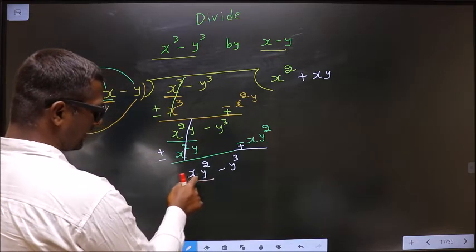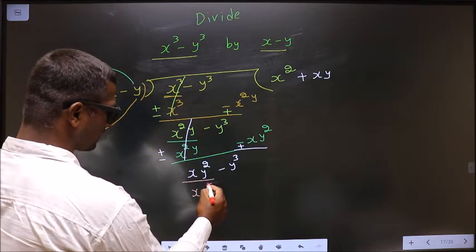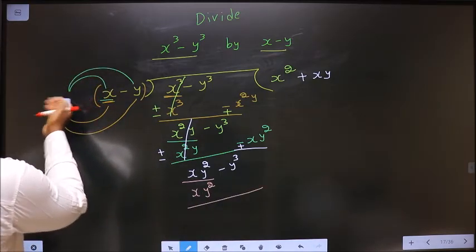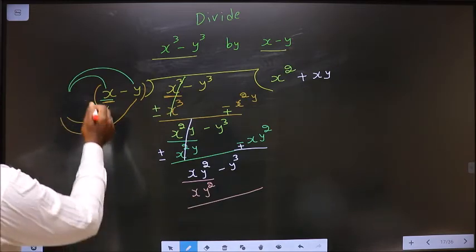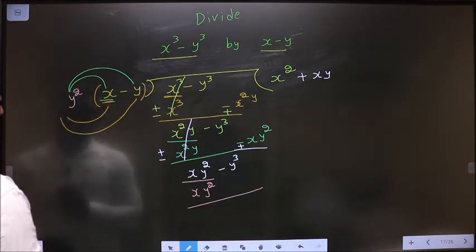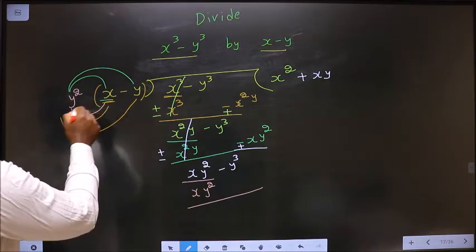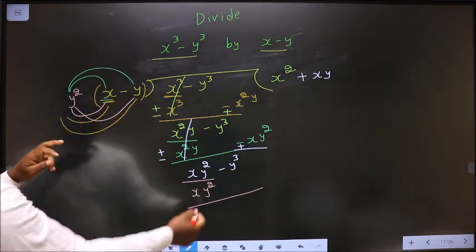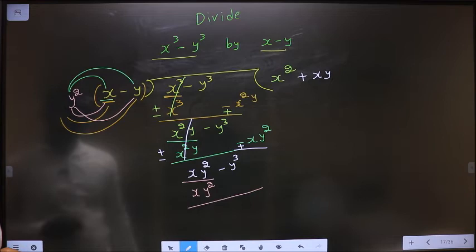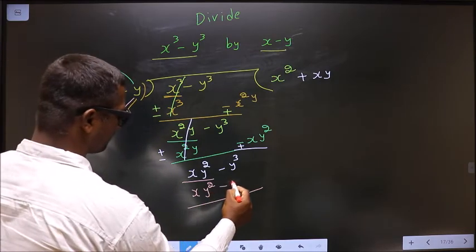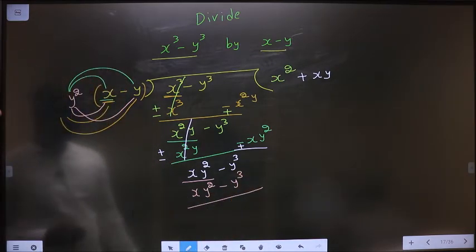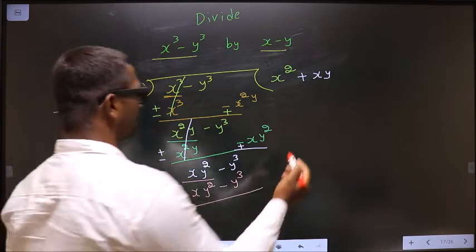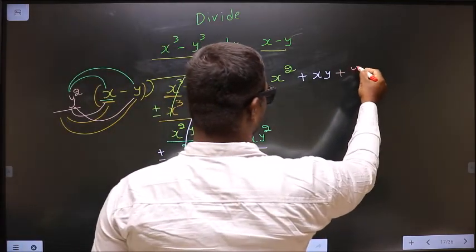Now here there is x y square, so below this I should also get x y square. Here there is x in the divisor. To get x y square, this should be multiplied with y square. When you are multiplying to this, you should also multiply to the other term. So y square times x is x y square, and y square times minus y is minus y cube. This is your next term of the quotient, so write it in the quotient: plus y square.